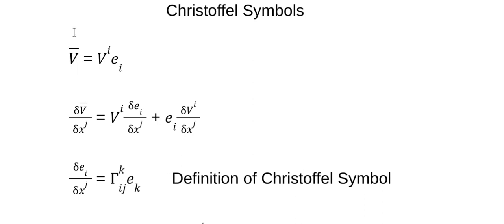Remember, you can define any vector as a linear combination of its components and its basis vectors. So if we differentiate this vector, these may or may not be constants. So what you have to do is use the chain rule: this times the derivative of that plus this times the derivative of that. Here's where the issue comes in — the basis vectors may change with the coordinates. And in relativity, because you're dealing with curvilinear coordinates, that's exactly what happens. They do change as you change with the coordinates.